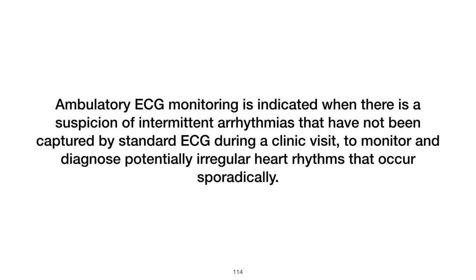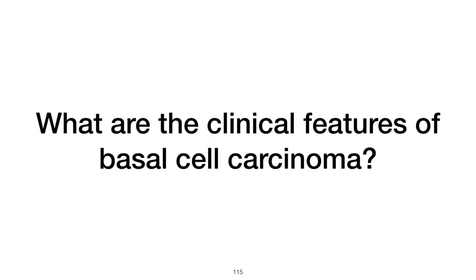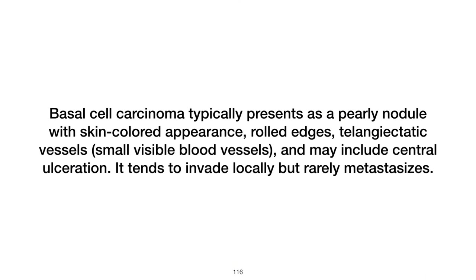When is ambulatory ECG monitoring indicated? Ambulatory ECG monitoring is indicated when there is suspicion of intermittent arrhythmias not captured by standard ECG during a clinic visit. What are the clinical features of basal cell carcinoma? Basal cell carcinoma typically presents as a pearly nodule with skin-colored appearance, rolled edges, telangiectatic vessels, and may include central ulceration. It tends to invade locally but rarely metastasizes.